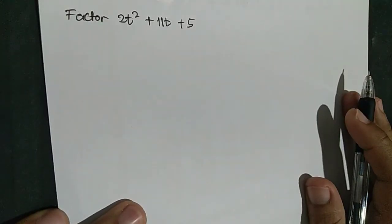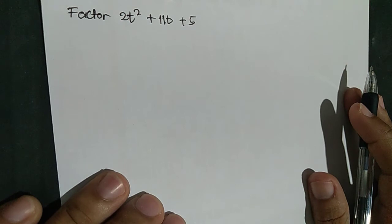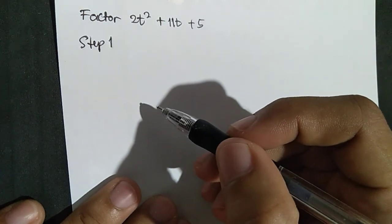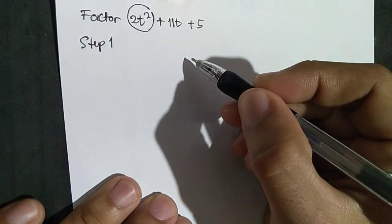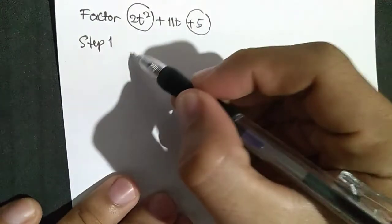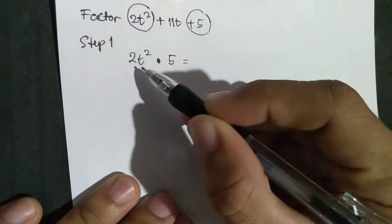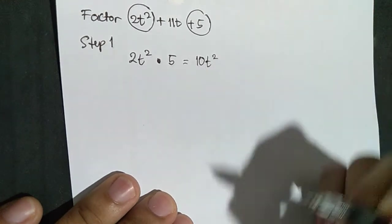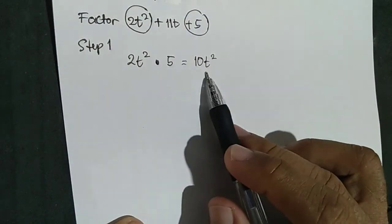Factor 2T squared plus 11T plus 5. There are 6 steps. Step 1: find the product of the leading term and the last term. Our first term is 2T squared and our last term is plus 5. So multiply: 2T squared times positive 5 gives a product of 10T squared.